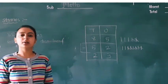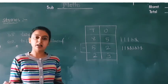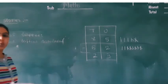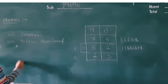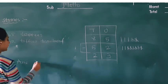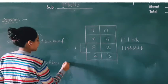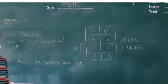How many toffees are left with Mahek? Mahek ke paas 23 toffees bachi - 2 tens and 3 ones, which is 23. So the answer will be 23. 23 toffees are left.